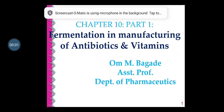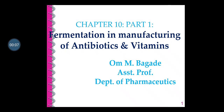Good morning students. In last lectures we had seen the outline related with the fermentation technology and the different types of components used for the process of fermentation. Today we're going to focus on the fermentation in manufacturing of antibiotics and vitamins. Production of antibiotics, vitamins, enzymes and alcoholic products is the main aim of the fermentation industry.